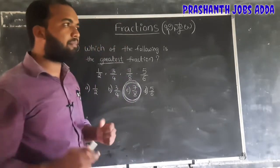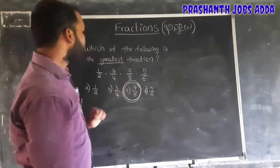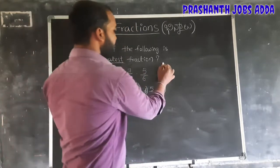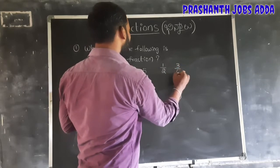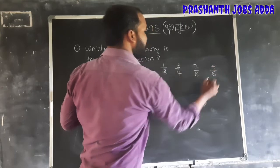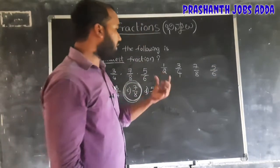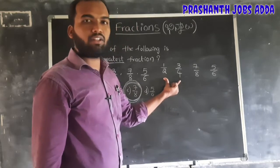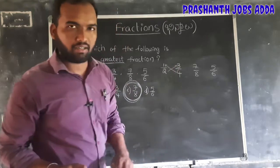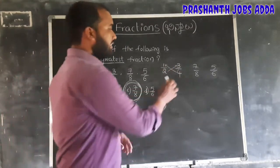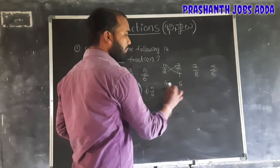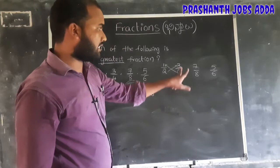Fourth method is the Criss-Cross method — cross multiplication. Given fractions 1 by 2, 3 by 4, 7 by 8, and 5 by 6. Cross multiply: 4 times 1 is 4, and 2 times 3 is 6. Since 6 is greater, 3 by 4 is the greater fraction of those two. Then compare using cross multiplication: 8 times 3 is 24, and 4 times 7 is 28. Since 28 is greater, 7 by 8 wins.